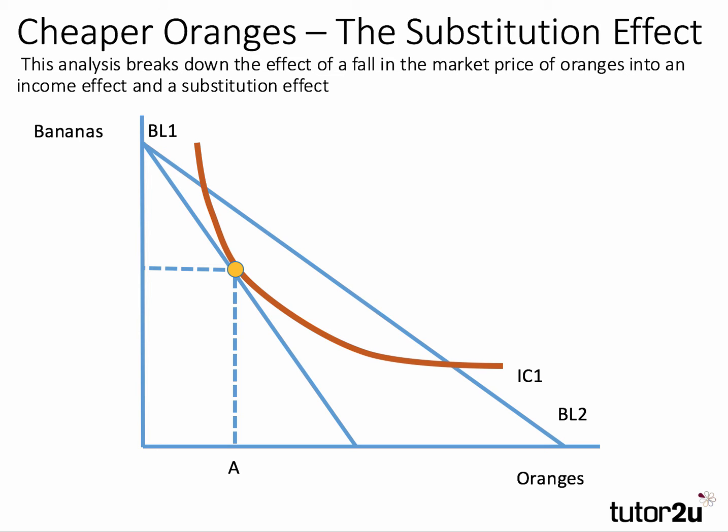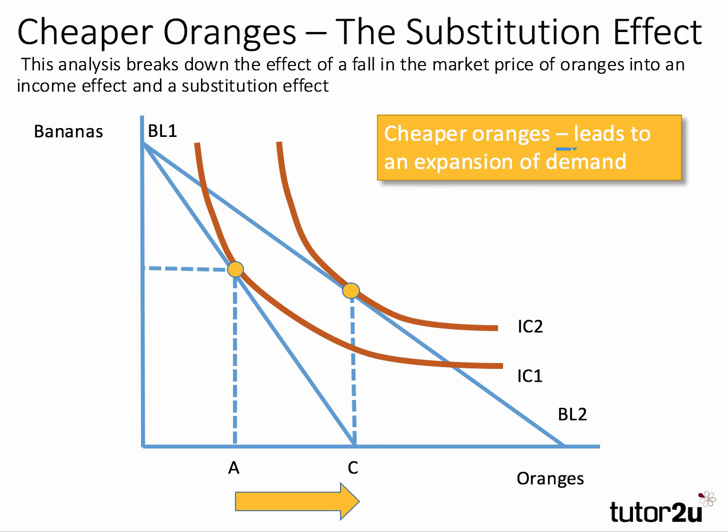Oranges have become cheaper in the market, and this allows the consumer to move on to a higher indifference curve, IC2. Indifference curves represent combinations of the two products between which the consumer is indifferent. So the fall in the price of oranges allows the consumer to move on to IC2, and in equilibrium at that tangency point, the consumer will consume quantity C of oranges. The fall in price has caused the consumer to move from equilibrium quantity A to equilibrium quantity C.